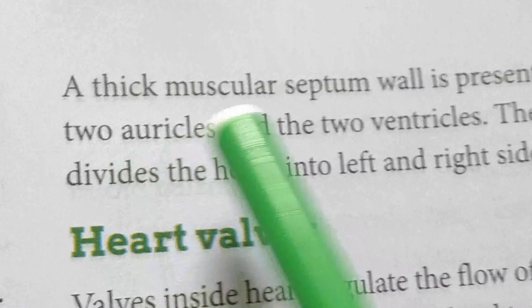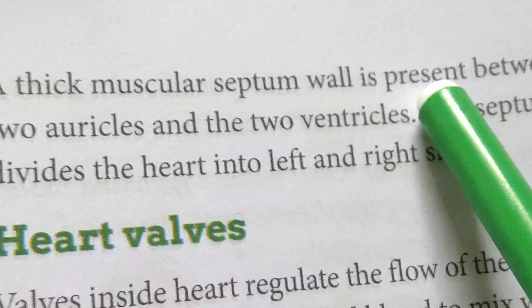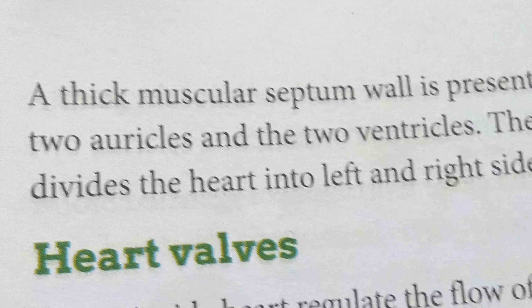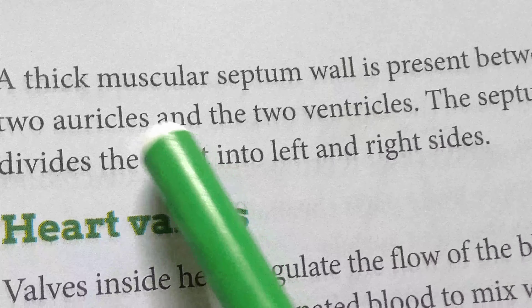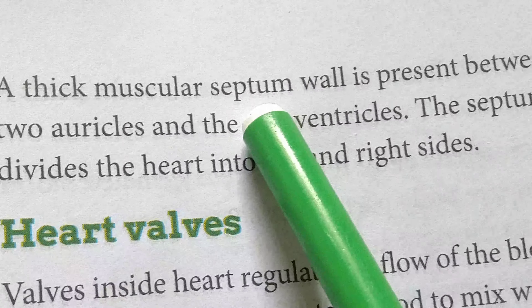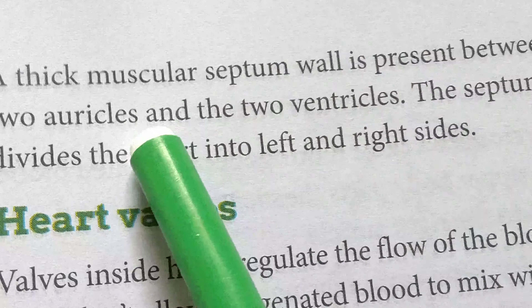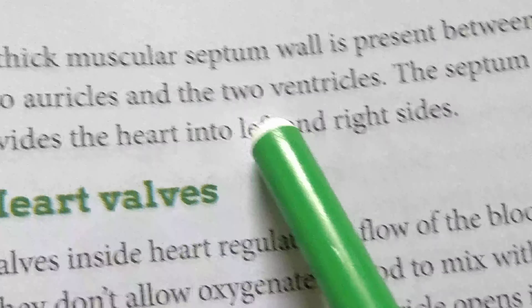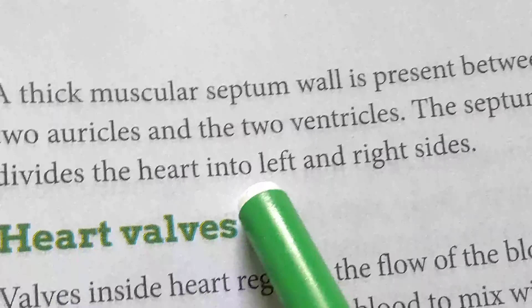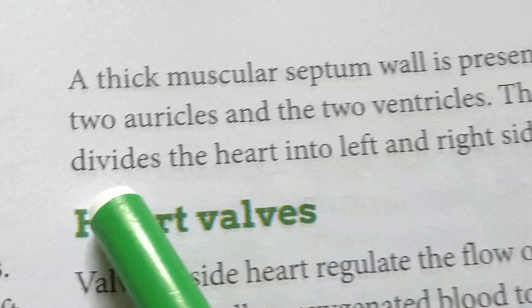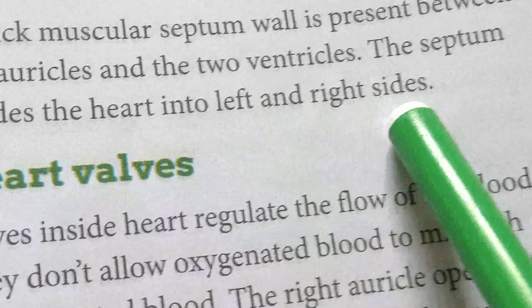A thick muscular septum wall is present between the two auricles and two ventricles. The septum divides the heart into the left and right side.